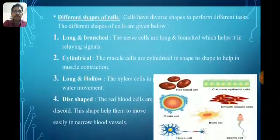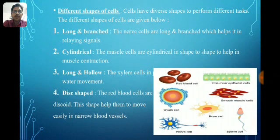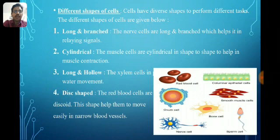Cells have diverse shapes to perform different tasks. First, long and branched — nerve cells are long and branched, which helps in relaying signals. Cylindrical — muscle cells are cylindrical in shape to help in muscle contraction. Long and hollow — xylem cells in plants are responsible for movement of water, so they are long and hollow.